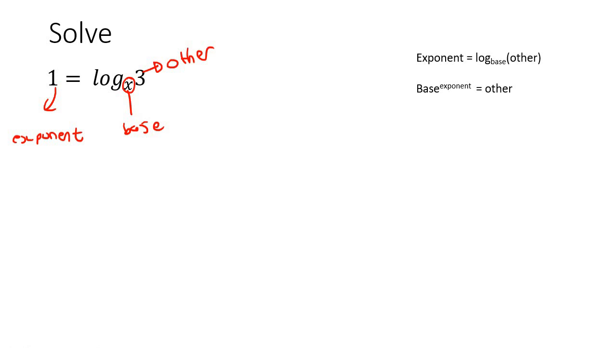So if we rewrite it as an exponential then we're gonna take the base and then exponent and then we make that equal to the other which is 3. So x to the power of 1 is just x so then x would just be equal to 3.